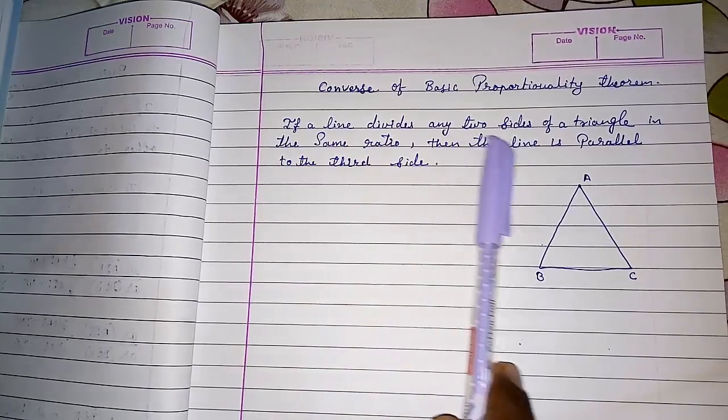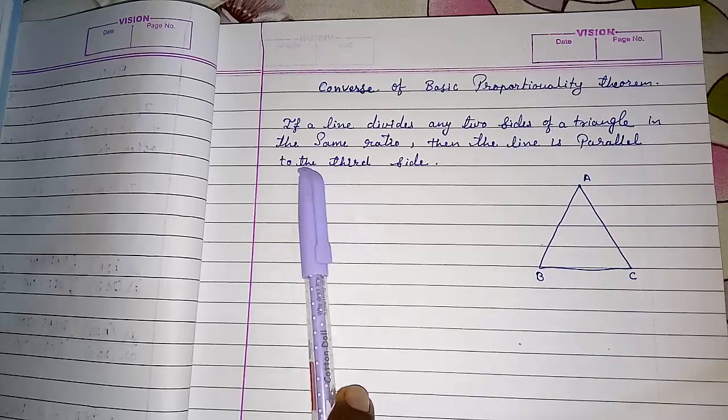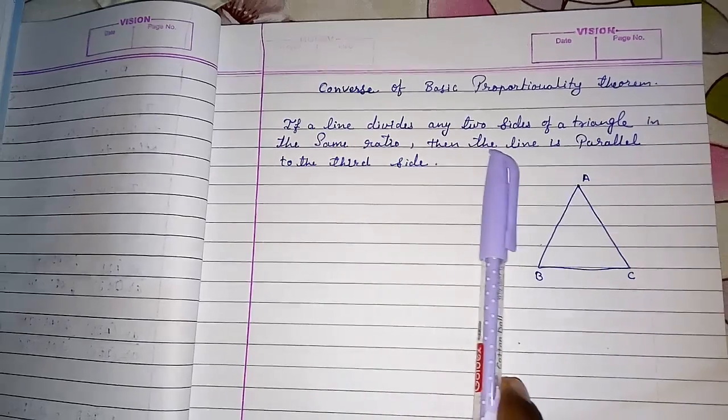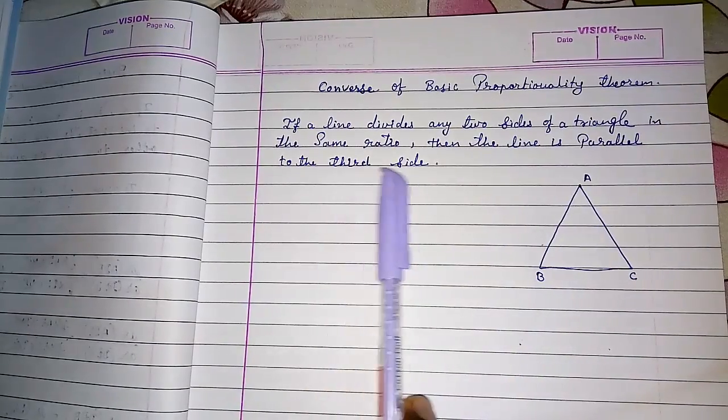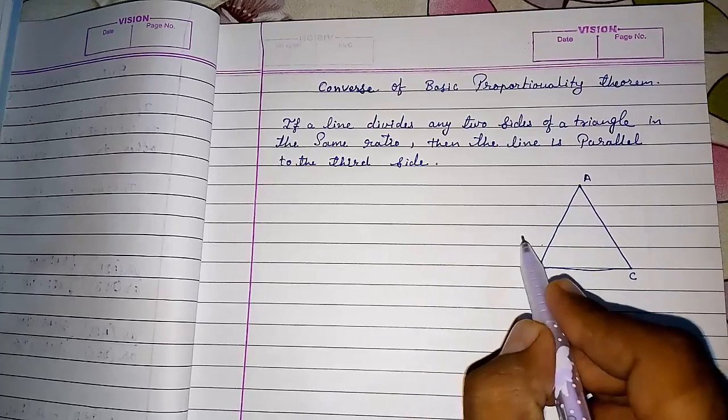If a line divides any two sides of a triangle in the same ratio, then the line is parallel to the third side. This means if we draw a line,